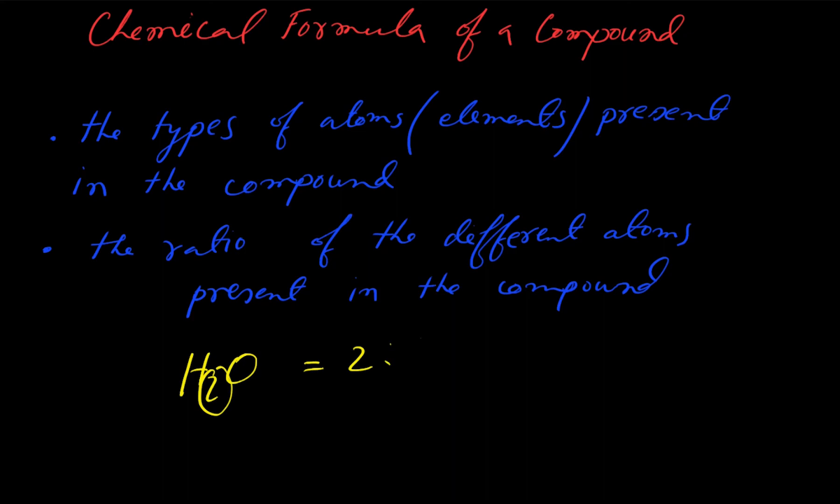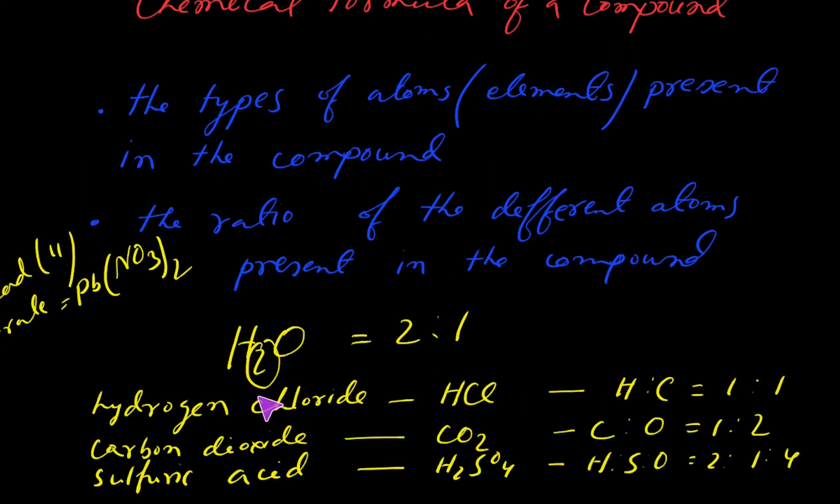If we discuss some more chemical formulas of compounds with their ratios, it will be clearer. Hydrogen chloride: chemical formula HCl, ratio of atoms is 1 to 1. Carbon dioxide: formula CO2, ratio is 1 to 2. Sulfuric acid: formula H2SO4, there are three elements and the ratio is 2 to 1 to 4.